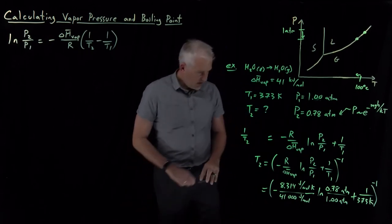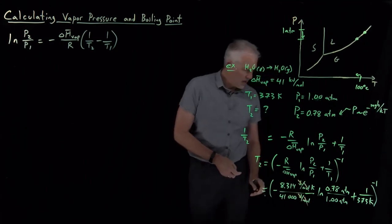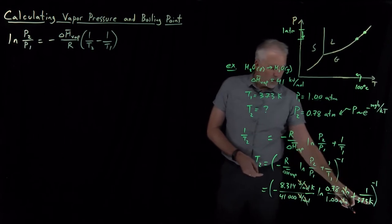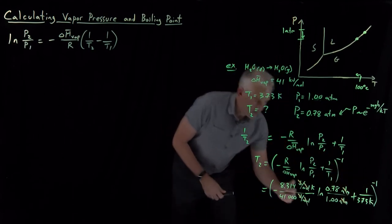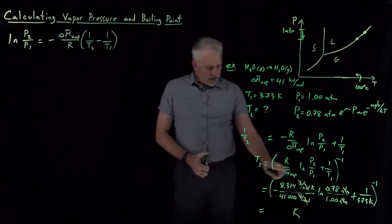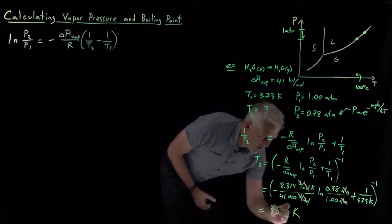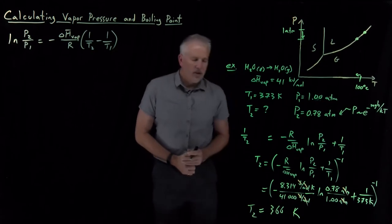So units look good. Joules cancel. 1 over moles cancel. These atmospheres cancel. I've got a 1 over Kelvin adding to a 1 over Kelvin. And when I take the reciprocal, that's going to end up in units of Kelvin, which is good. And when I do the arithmetic, that works out to be 366 Kelvin.